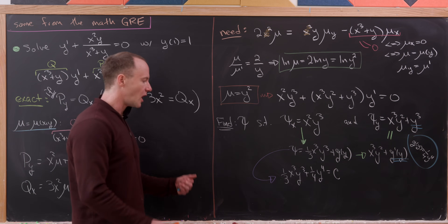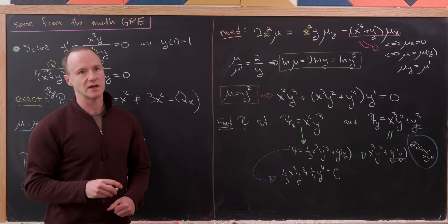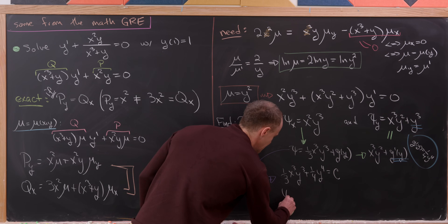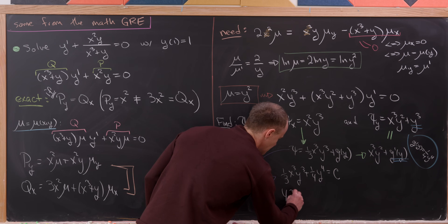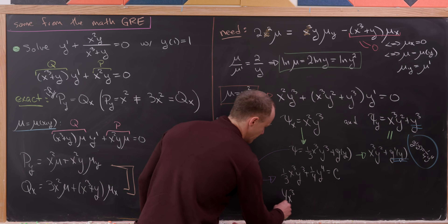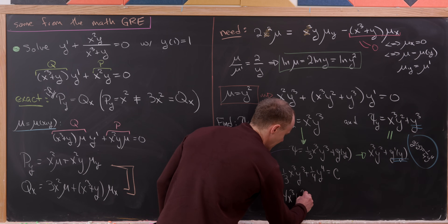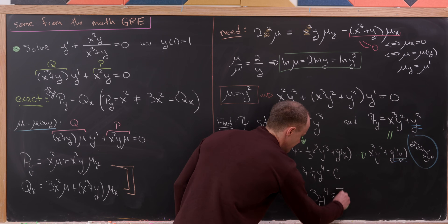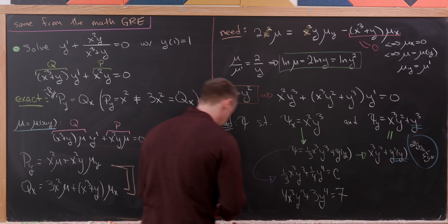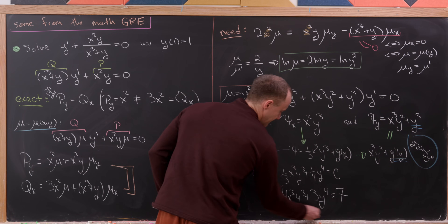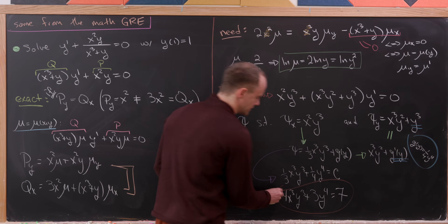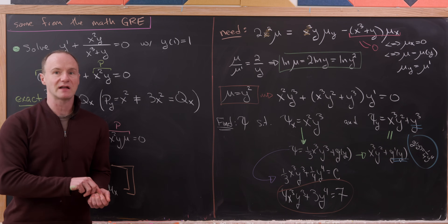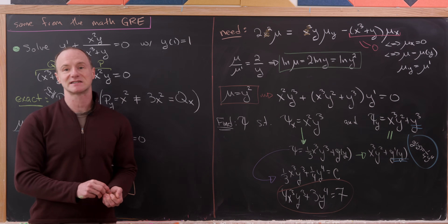After clearing denominators, the final solution is 4x³y³ + 3y⁴ = 7. That is the final solution to our differential equation. Now let's move on to the next type of problem.